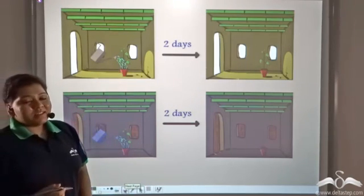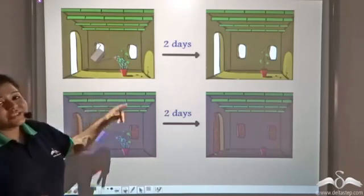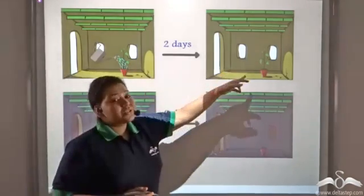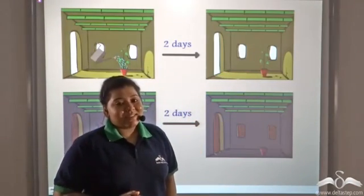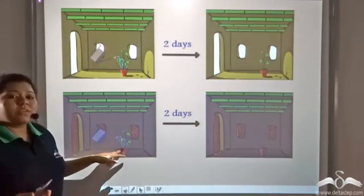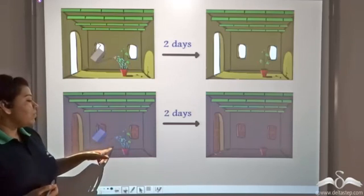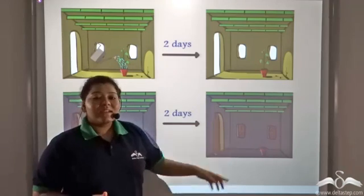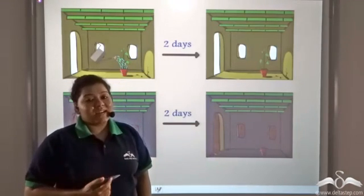Keep a potted plant for two days in a lighted room and sprinkle some water. The plant grows and survives. But if the same potted plant is kept for two days in a dark room and water is sprinkled, you will see that the plant slowly wilts off and dies.